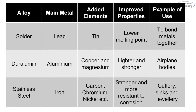Here are three examples of alloys. Solder has lead as its main metal with some tin added, giving the alloy a lower melting point. It is used to bond metals together in things like computer microchips, motherboards, and electronics. Duralumin uses aluminium as its main metal with copper and magnesium added, making it much lighter while also increasing its strength. We use duralumin for airplane bodies because the plane must be light enough to take off but strong enough to withstand temperature and air pressure.